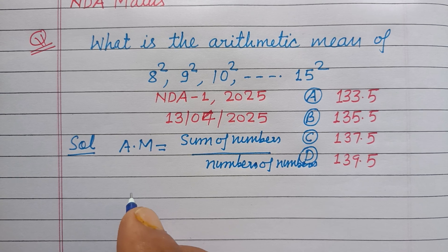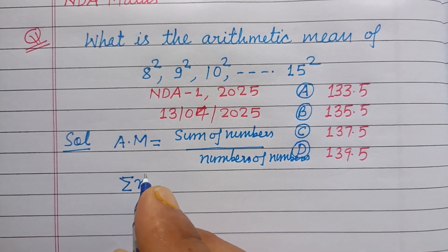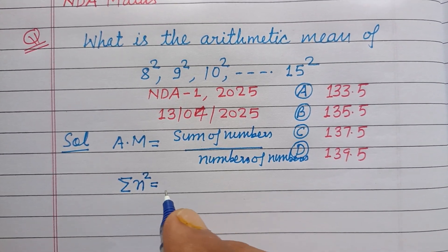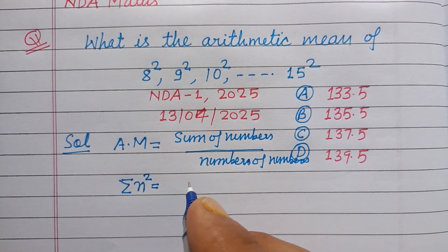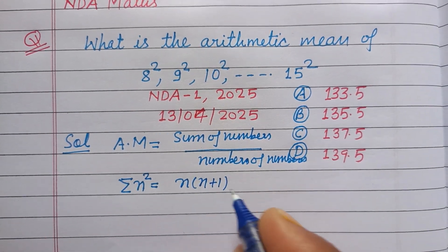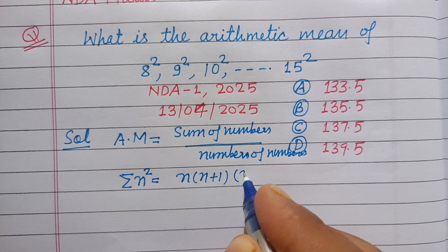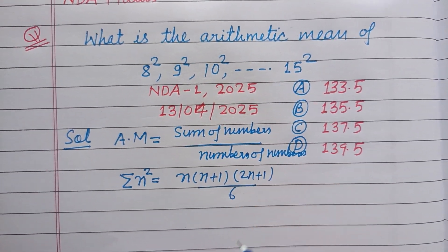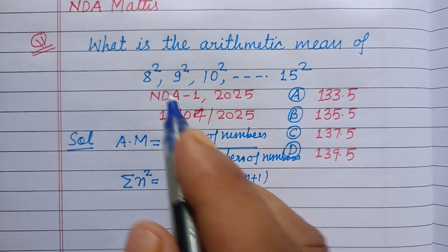You know the sum of squares of integers or natural numbers: the sum of n squared equals n(n+1)(2n+1) divided by 6. But our series starts from 8 squared, not from 1.